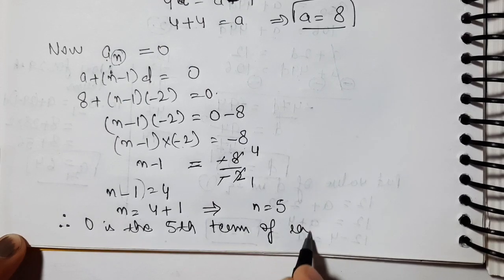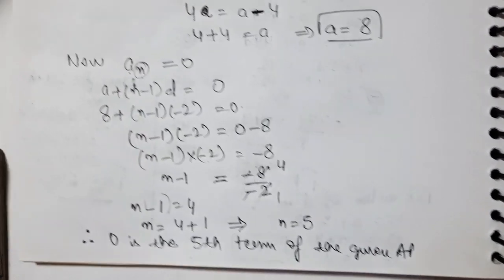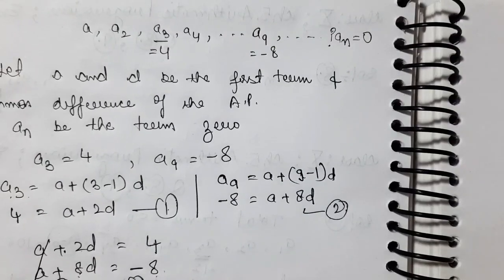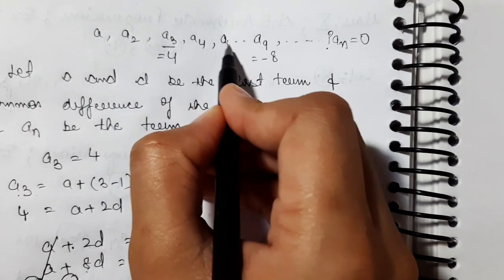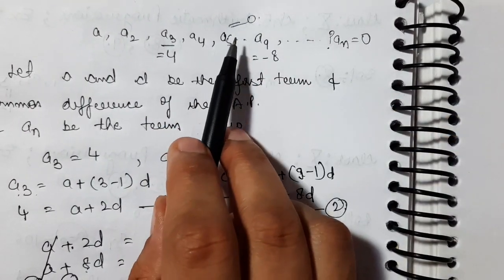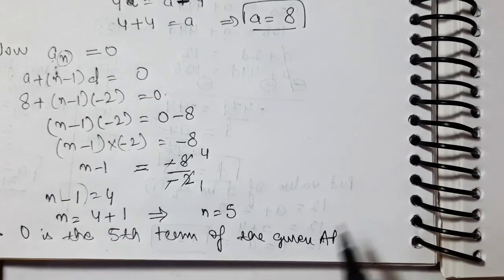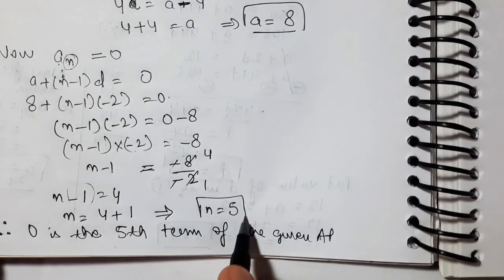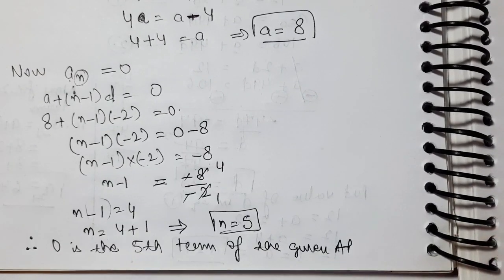The 5th term of the given AP is 0. The number that appears at the 5th position in this AP will be 0. That is what we needed to find out. I hope you understood this. If you have any doubts, please ask in the comments. Thank you so much, students.